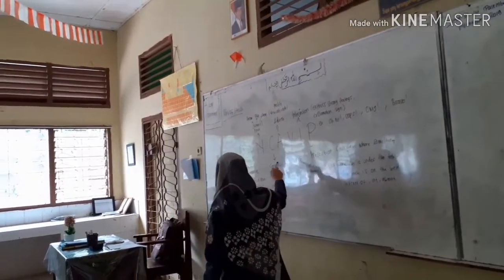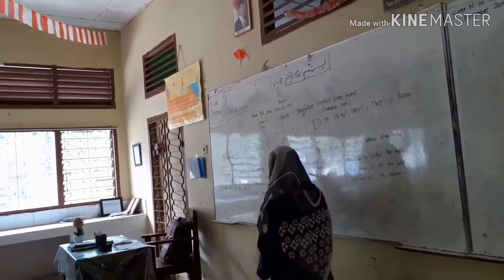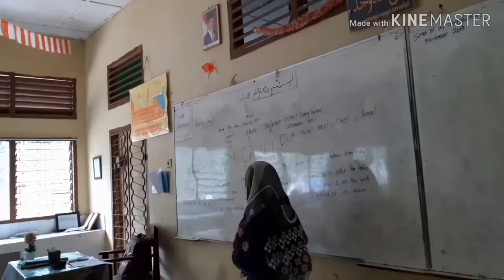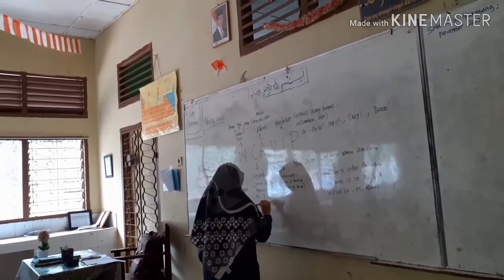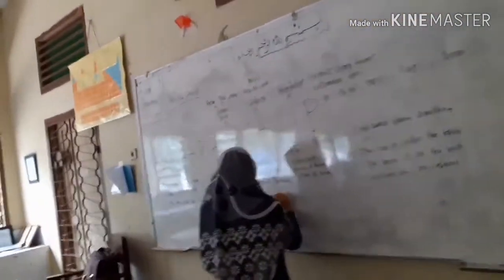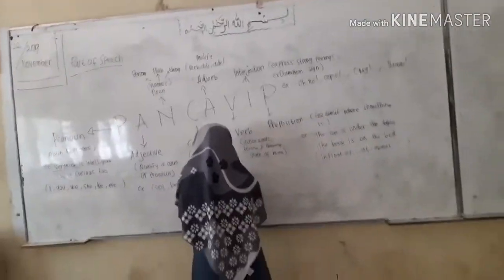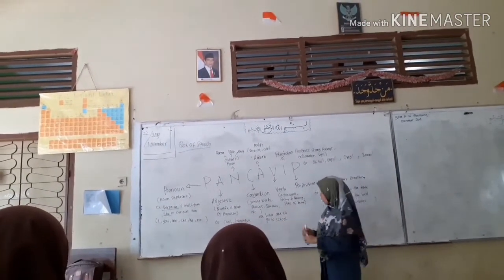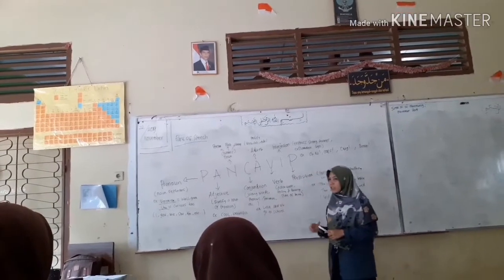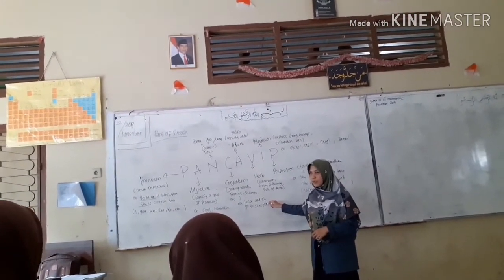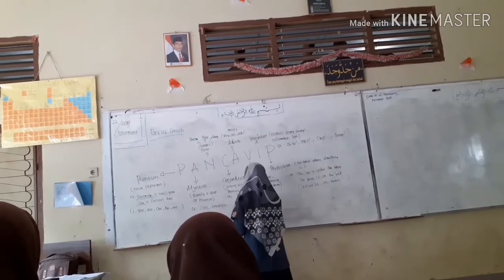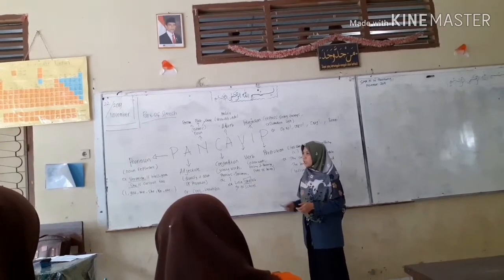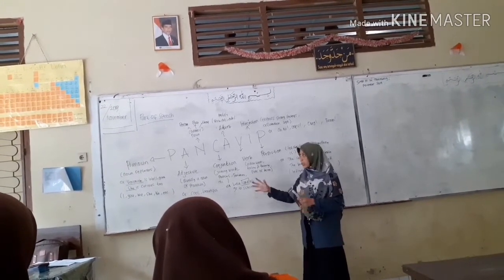Next, conjunction. In Bahasa, conjunction is 'kata hubung'. Conjunction connects words, place, time, and clauses. For example: 'Lina and Alice go to school.' Which one is the conjunction? 'And' — that is the conjunction. Other examples include: but, before, and so on.